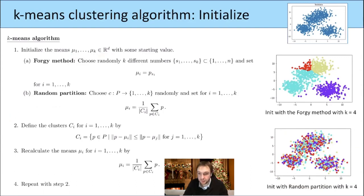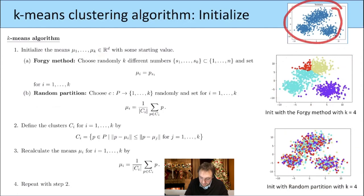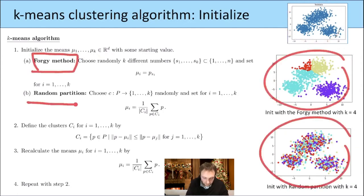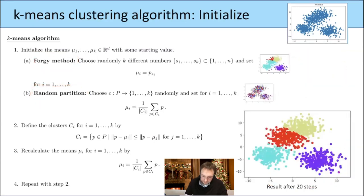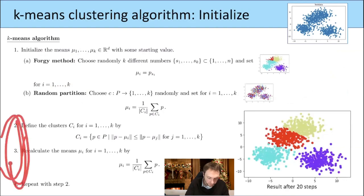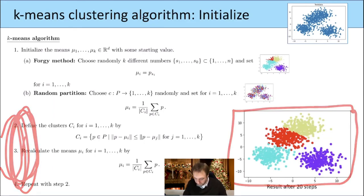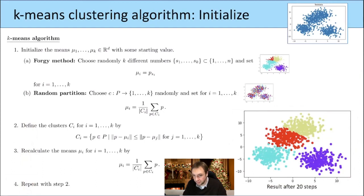In this case, I choose this test data. Here is what I get with the Forgy method and this is what I get with the random partition method. After doing this 20 times, in the end I get a result that is what we might expect in this example. Both of them actually lead to the same result in this case.